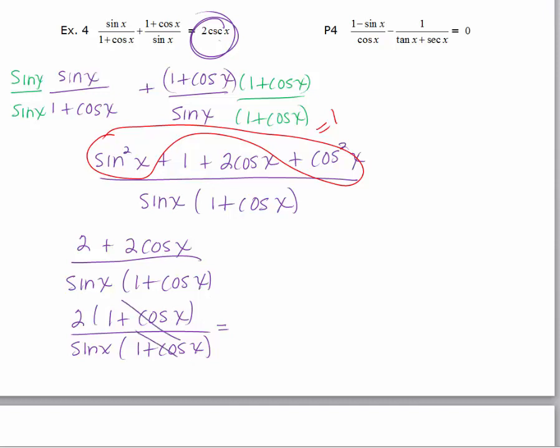We can see that the cosine x's cancel and I'm left with 2 over sine x. And I don't want to lose track of where I'm supposed to get to, right? I need to get to 2 cosecant x and I'm almost there. Because this 2 over sine x is really like saying 2 times 1 over sine x. And 1 over sine x is cosecant x. So we have verified this identity.